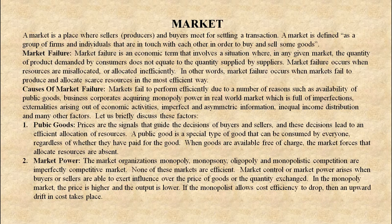Second point: Market power. Market structures such as monopoly, monopsony, oligopoly, and monopolistic competition are imperfectly competitive markets — none of these markets are efficient. Market control or market power arises when buyers or sellers are able to exert influence over the price of goods or the quantity exchanged. In a monopoly market, the price is higher and the output is lower. If the monopolist allows cost efficiency to drop, an upward drift in cost takes place, so no market is perfectly competitive.